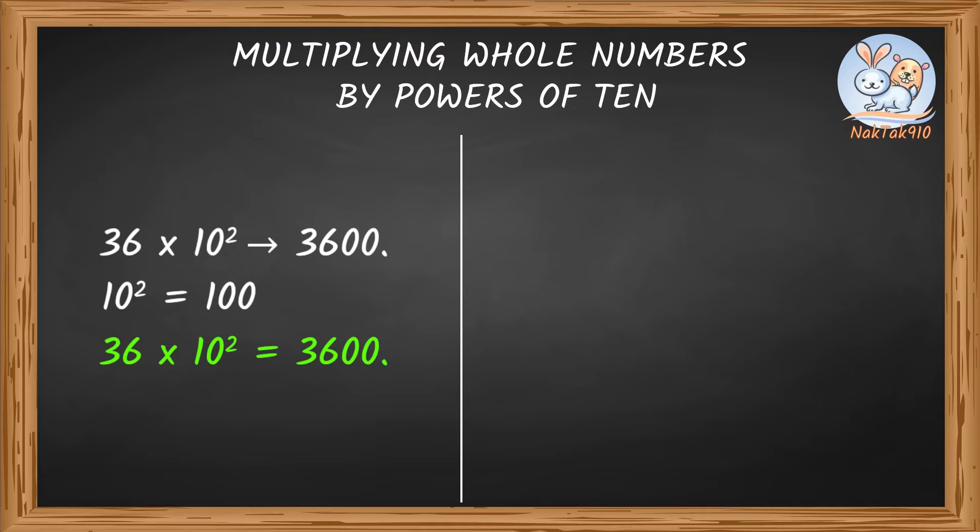36 times 10 squared equals 3600. Tack! Here, solve these for me. Sure, Nack!